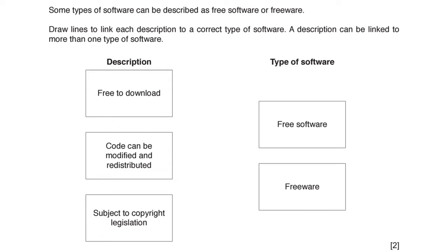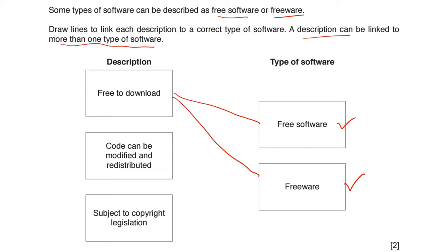Some software can be described as free software or freeware. Draw lines to link each description to the correct type. Free to download — both free software and freeware are free to download. Code can be modified and redistributed — that is free software, as the code is publicly available. Subject to copyright — freeware is usually subject to copyright.